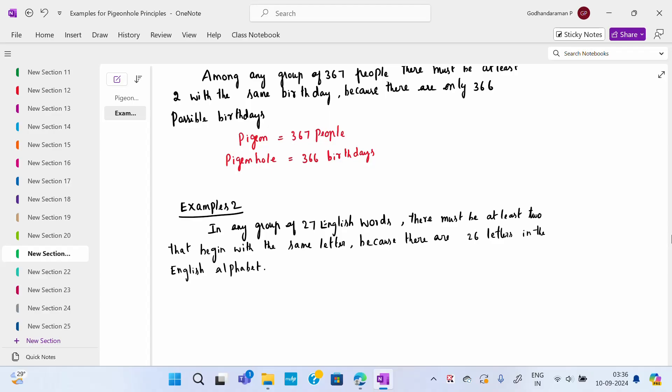So how many pigeons are there? Pigeon, 27 words. Pigeon will contain 27 words, but pigeonhole, 26 alphabet.